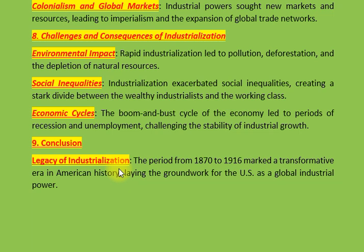صنعتی انقلاب کے دوران کئی اہم صنعتوں نے ترقی کی جن میں ریلوے، سٹیل، کپڑا اور تیل شامل ہیں۔ سٹیل کی صنعت نے بیسمر کے عمل کے ذریعے پیداوار میں انقلاب لایا، کپڑے کی صنعت نے پیداوار میں اضافہ کیا، اور تیل کی صنعت نے ضروریات کے لیے نئے ذرائع فراہم کیے۔